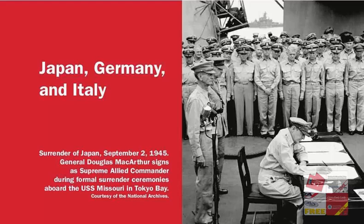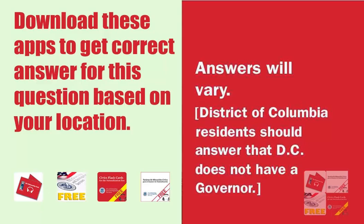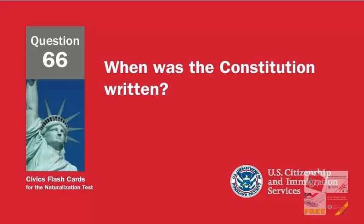What are two rights in the Declaration of Independence? Life. Liberty. Pursuit of Happiness. Who is the governor of your state now? Answers will vary. District of Columbia residents should answer that D.C. does not have a governor. When was the Constitution written? 1787.